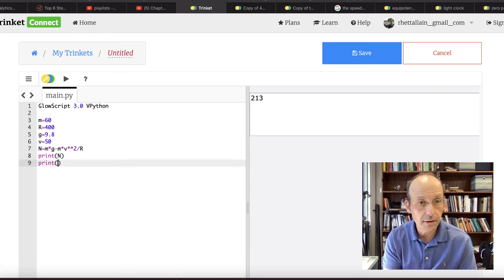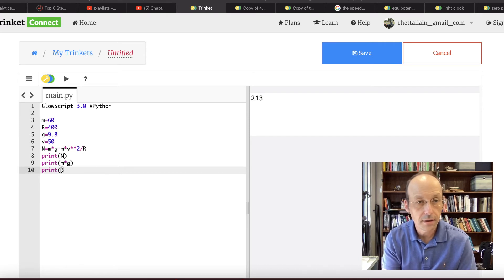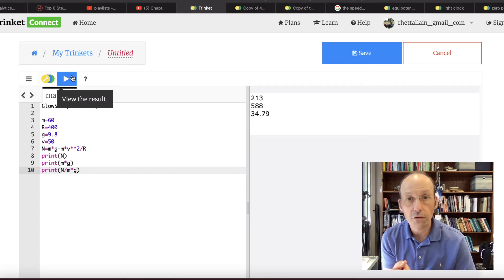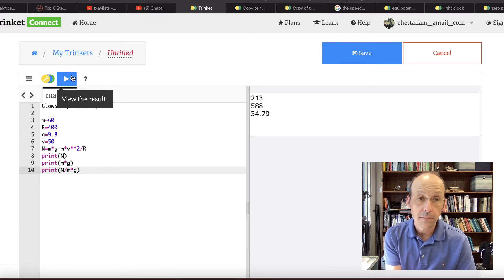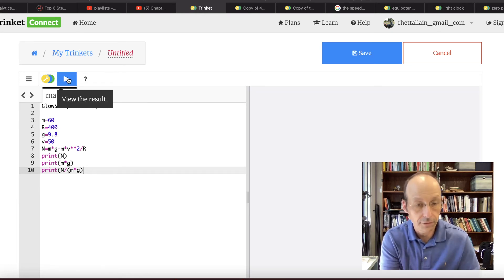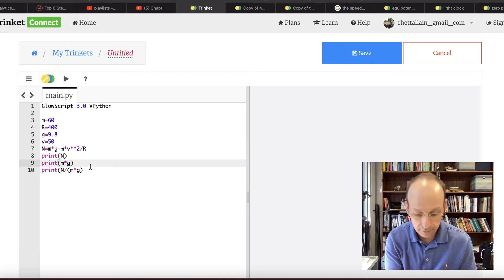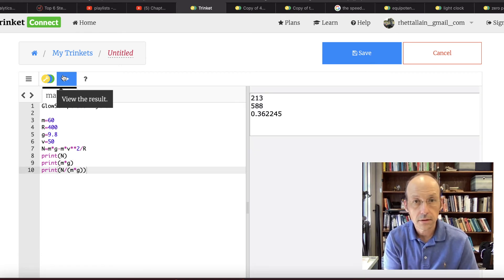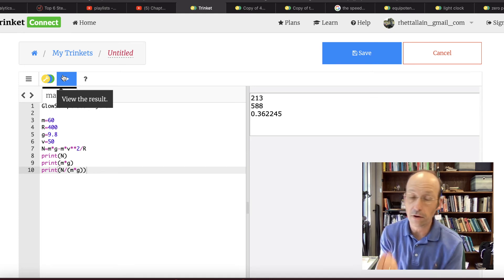Let's do this. Print m times g, and let's print n divided by m times g, just for fun. So 588 is the weight of the person, 213 is the apparent weight, so that's 30, oh, I see what I did wrong. I wanted to get the percent, so I need to put a parentheses around this, because that's divided by m times g. And there's an error, because I left off a parentheses. So that's 36% of a person's actual weight.